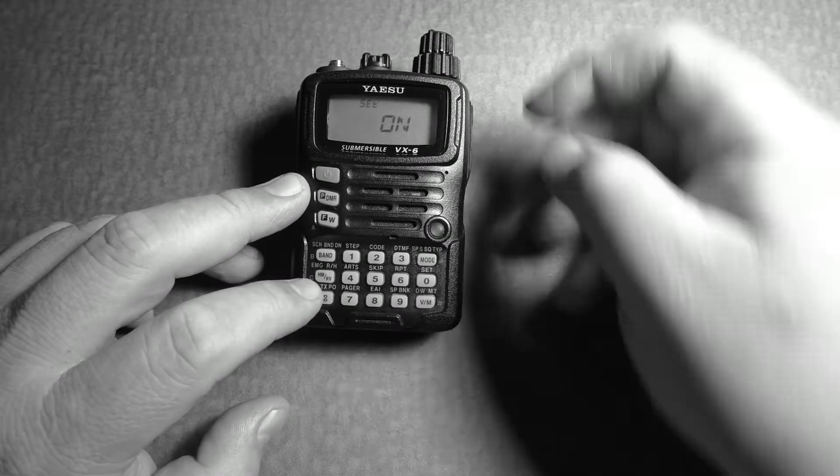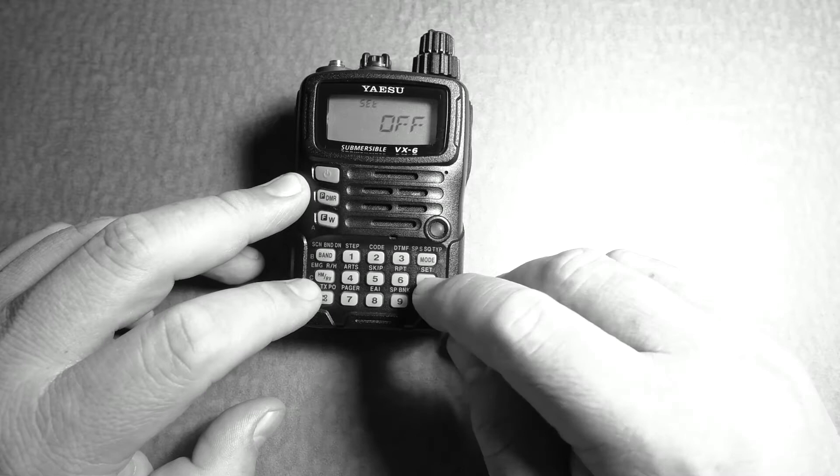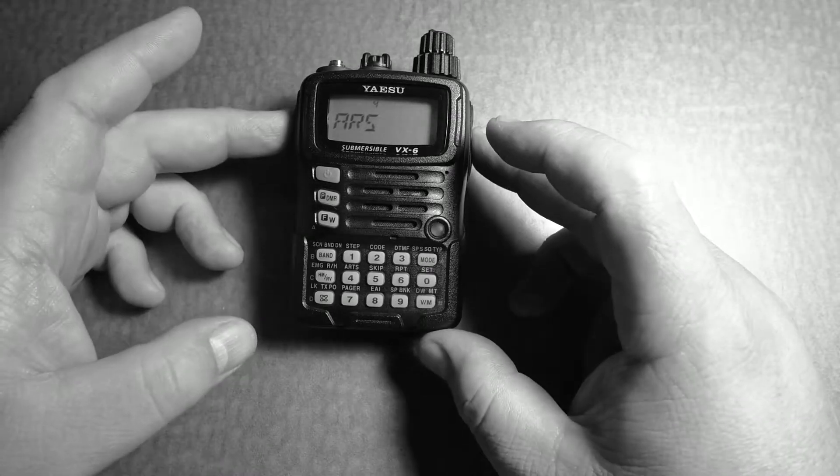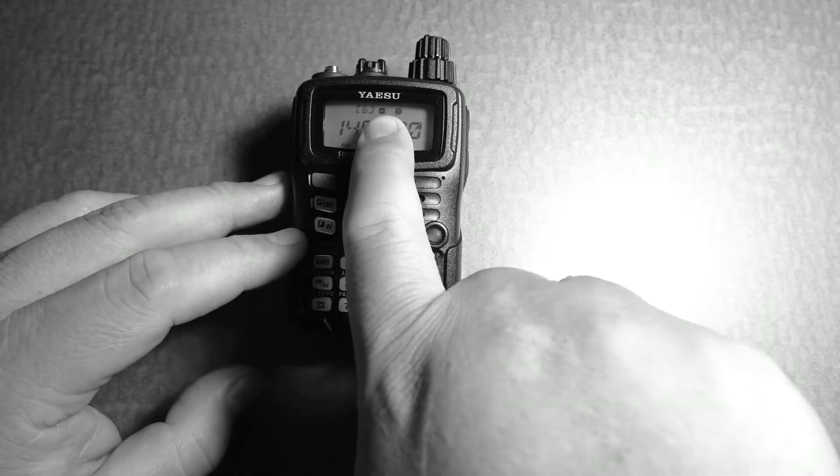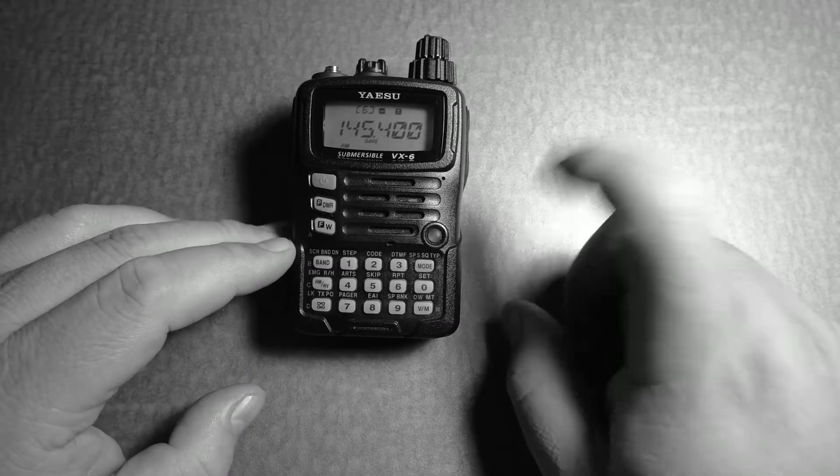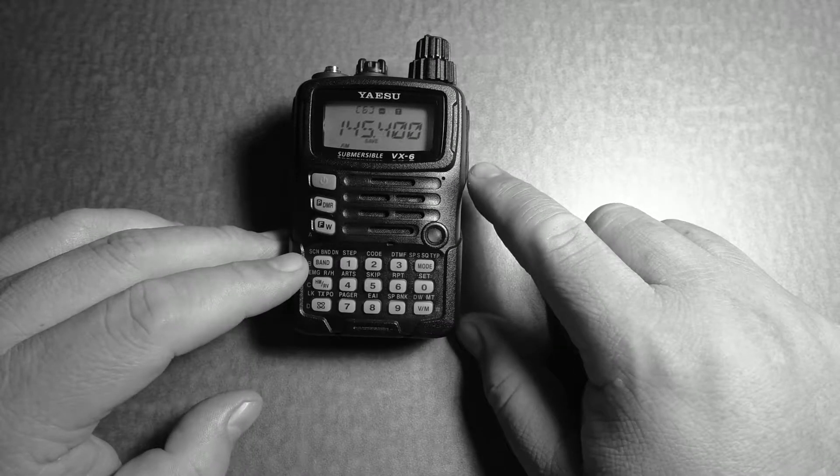We want to turn that off. Press 0, turn it off. Press 0 again. And then press the PTT button. That didn't change the plus or minus sign that you have up there, and we will get rid of that.